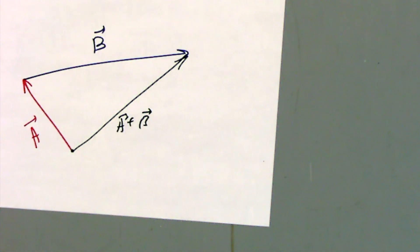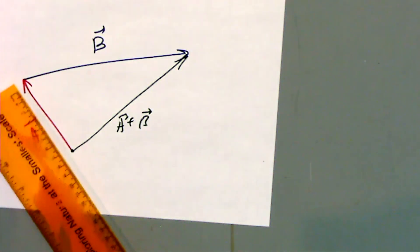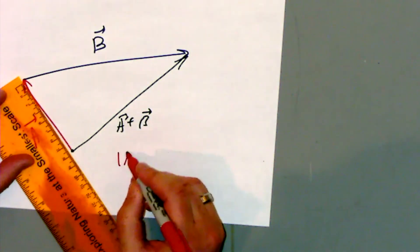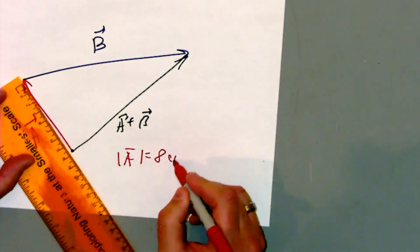But every arrow has a magnitude. So the magnitude of A is equal to 8 centimeters.